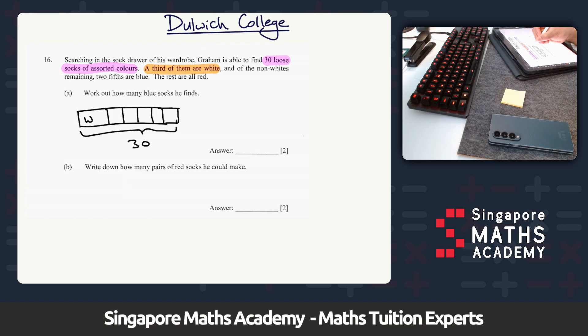Two fifths are blue, the rest are all red. So I've got blue, blue, and I've got red, red, red. Okay, so I've got this question here and it seems a bit tricky at first, right?